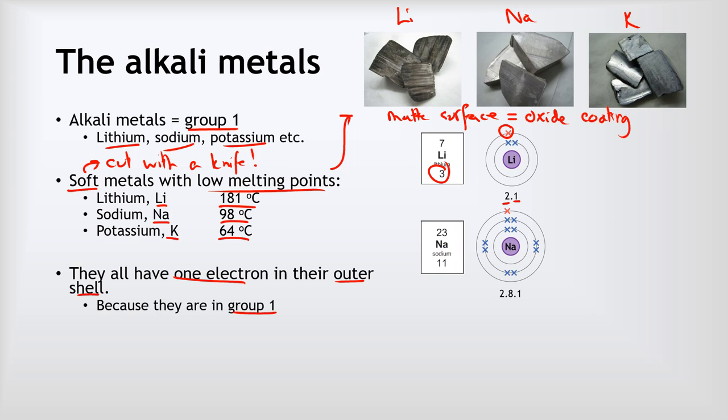Sodium is the next period down, and so it has an atomic number of 11, which means 11 electrons, two in its first shell, eight in the second shell, and again one in that outer shell.